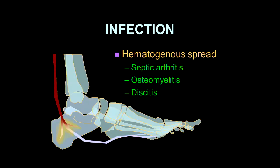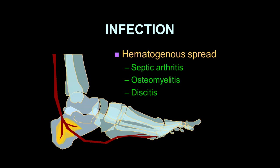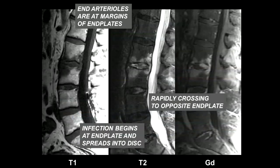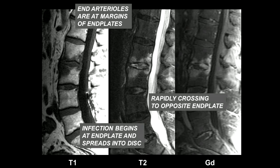Hematogenous spread is the most common. We see this in cases of septic arthritis, osteomyelitis around the body, especially spine, including discitis. But the disc is not primarily involved usually by infection. Usually the infection deposits in the capillaries, and the end arterioles in the spine are at the margins of the end plates. Now, the disc is avascular normally, but the disc material is very tasty to bacteria. So the bacteria jump from the end plate into the disc and eat it up and then rapidly cross over to the other side, giving the classic appearance of discitis and osteomyelitis.